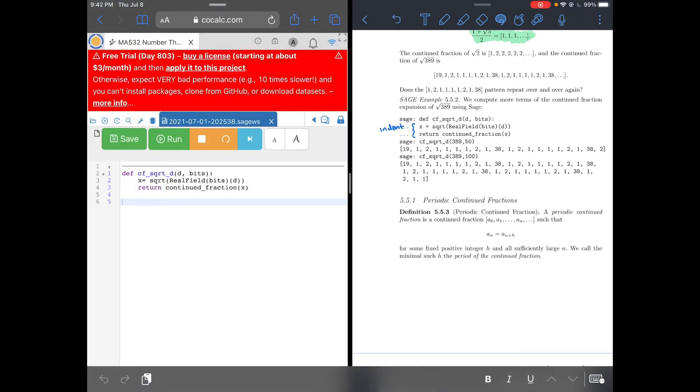We've got our function here. We just copy paste it from SAGE where CF stands for continued fraction, sqrt for square root. You tell it what d is. So d is an input here. The other input is you tell it how precise you want it to be. That's bits.